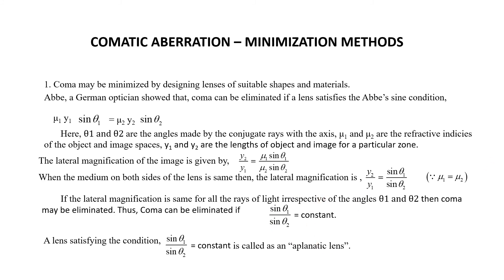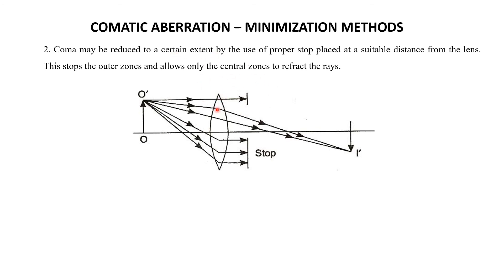The second minimization method: different zones forming different images is the only defect in case of chromatic aberration. If you block any of the rays, the aberration can be minimized. Coma may be reduced to a certain extent by use of a proper stop placed at a suitable distance from the lens — it stops the outer zones and allows only the central zones. The defect produced by outer zones can thus be minimized. However, this method is not preferred because cutting some rays reduces the intensity of the image.